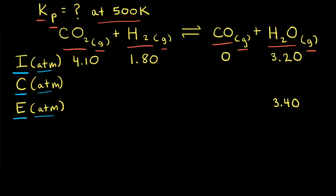A mixture of carbon dioxide, hydrogen gas, and H2O are placed in a previously evacuated flask and allowed to come to equilibrium at 500 Kelvin. The initial measured partial pressures are 4.10 atm for CO2, 1.80 atm for H2, and 3.20 atm for H2O. Since no carbon monoxide was added initially, its partial pressure is zero. After the reaction reaches equilibrium, the partial pressure of H2O is measured to be 3.40 atmospheres.